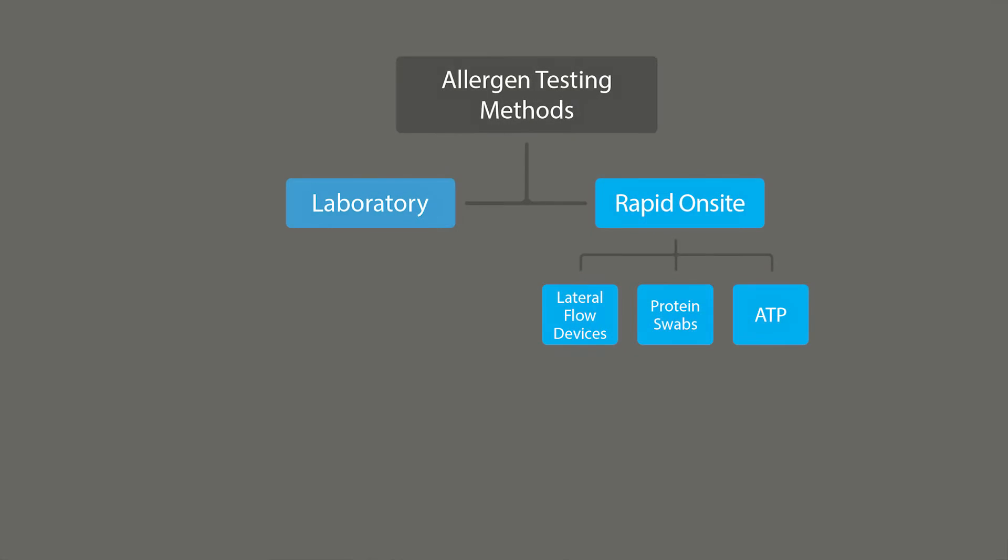These qualities make lab-based methods ideal to support cleaning validation activities. Now let's look at the rapid on-site testing methods. These are cost-effective and mobile, and operators need very little technical skill. Three types have gained popularity in recent years. First, allergen-specific lateral flow devices or dipstick tests are qualitative or semi-quantitative immunochromatographic tests based on the ELISA technique, and they typically test a single allergen at a time.